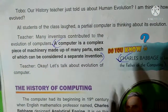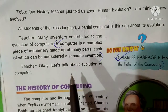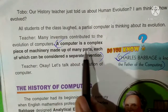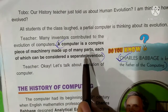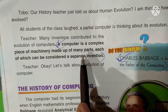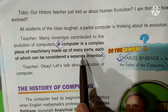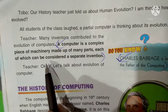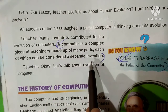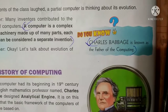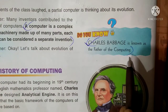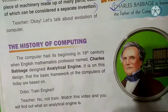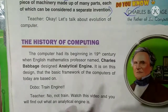Now we discuss the definition of a computer. A computer is a complex piece of machinery made up of many parts. Each of these parts can be considered a separate invention. Charles Babbage is known as the father of computers.